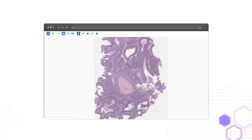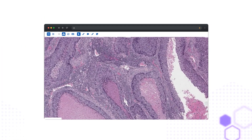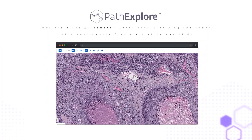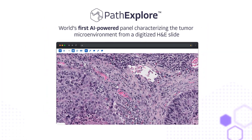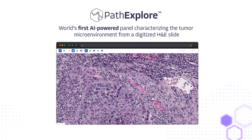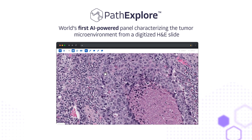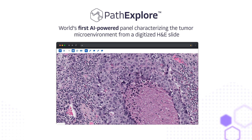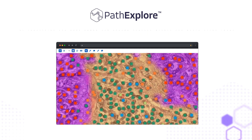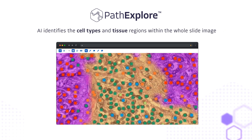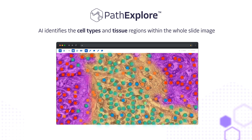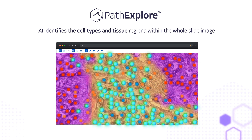To solve this, PathAI created PathExplore, an AI-powered panel characterizing the tumor microenvironment from a digitized H&E slide. AI identifies the cell types and tissue regions within the whole slide image, extracting over 600 human interpretable features.